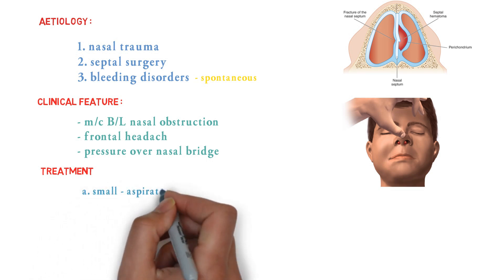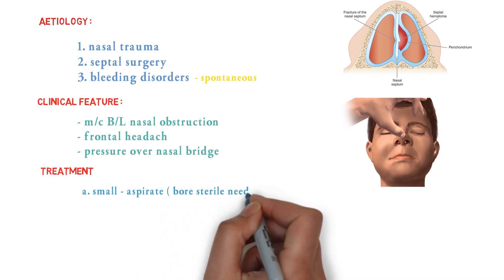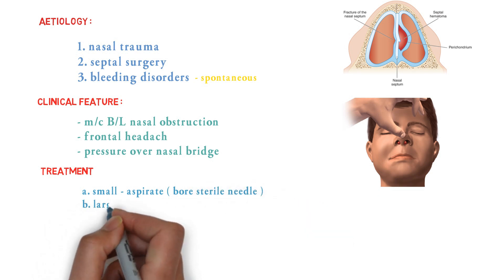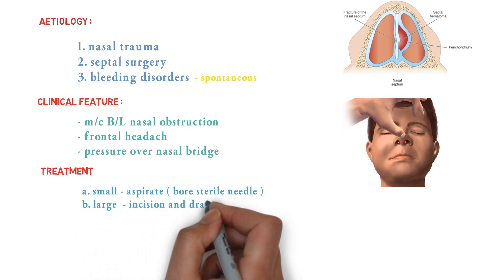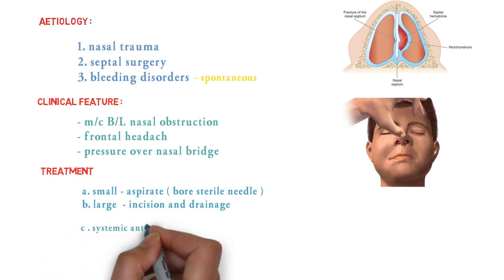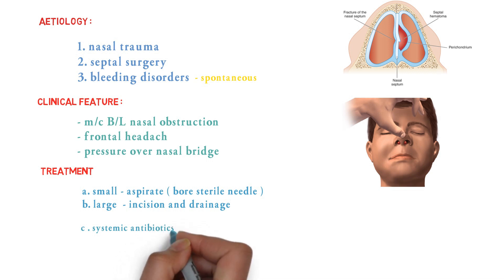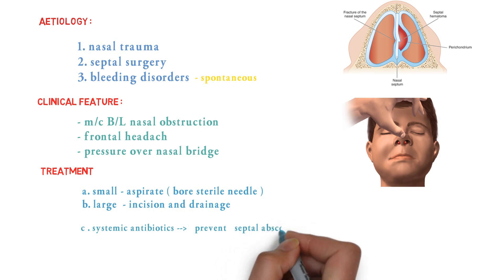For treatment: if there is a small hematoma, we can aspirate it through a bore sterile needle. If the hematoma is large, we take incision and drainage. Following drainage, the nose is packed on both sides to prevent reaccumulation, and afterward systemic antibiotics are given to prevent septal abscess.